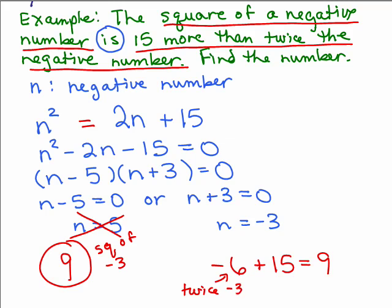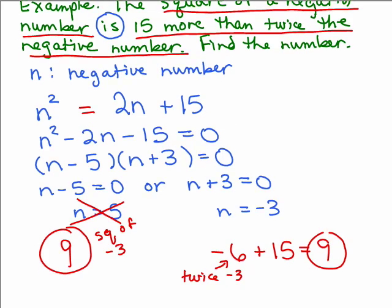Twice negative 3, and I added 15, yes, I got 9, certainly is 15 more than twice negative 3. So negative 3 must be the correct solution.